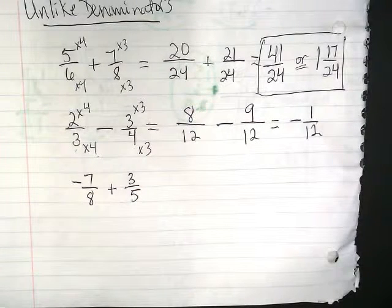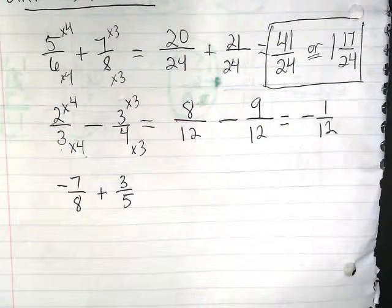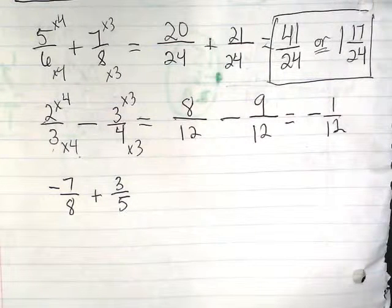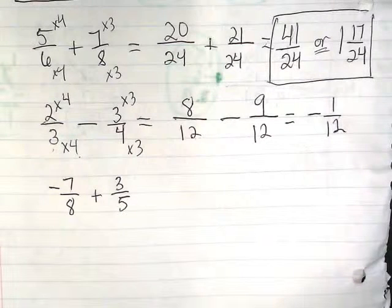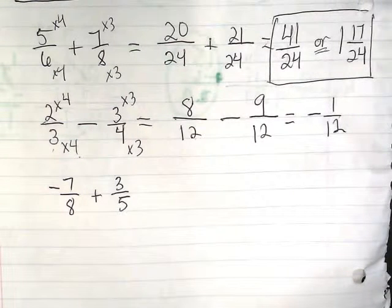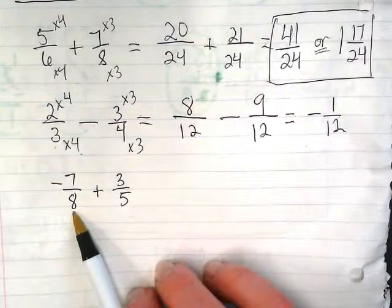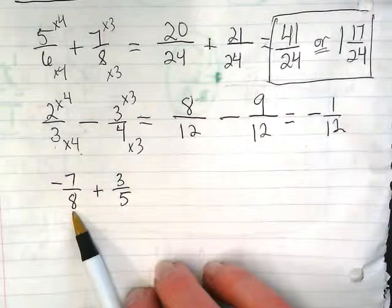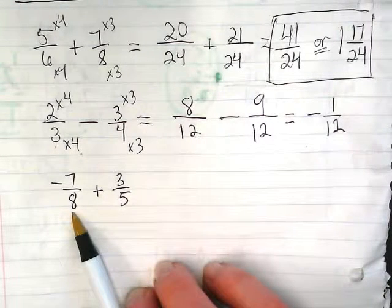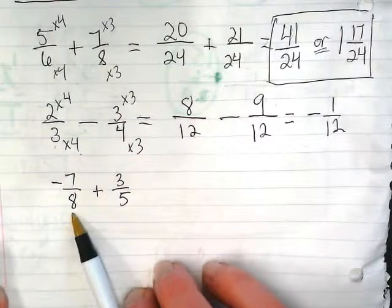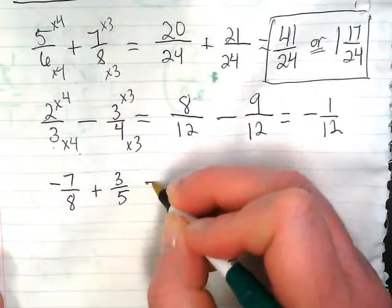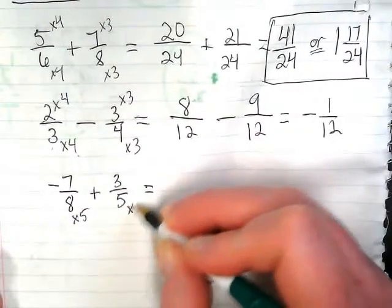So let's try one that has a negative plus a positive and they have unlike denominators. So negative 7 eighths plus 3 fifths. We want to get a common denominator for 8 and 5. I think the lowest one is going to be 35. Can you guys think of another one? We have 16, 24, did I say 35? Yes, 40. I was thinking 6, but that wouldn't work either. Anyway, we're going to go up to 40. 8 and 5 don't have a common denominator until you get to the number where the two of them are multiplied together.